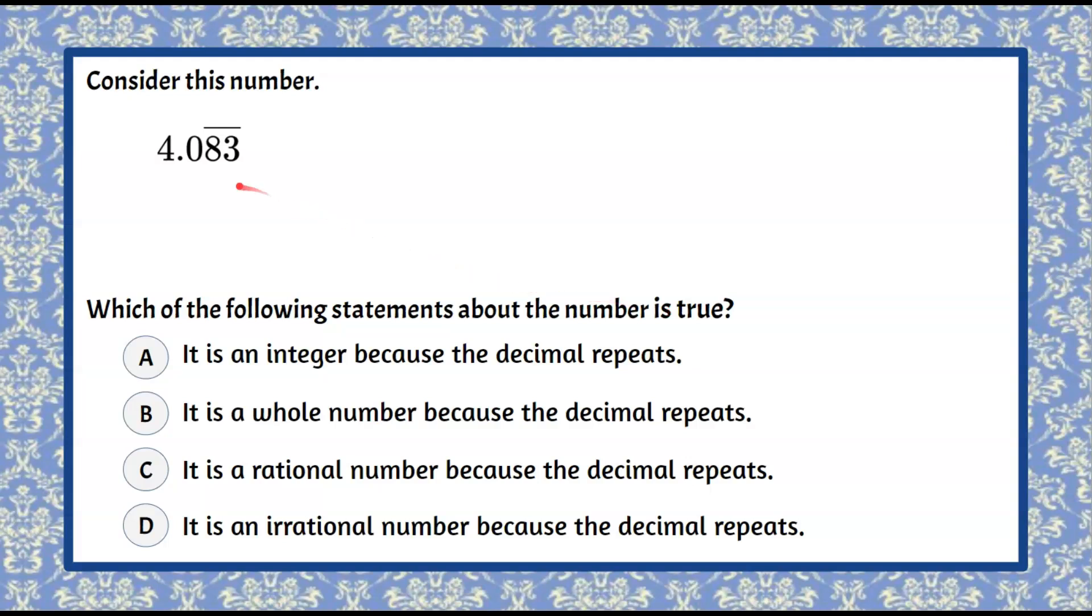Welcome back. So as we consider this number and our four statements, we want to know which one of the statements is true. I look at each statement and I see that the first one is about an integer, a whole number, a rational number, and then an irrational number, and all four of these statements say because the decimal repeats.